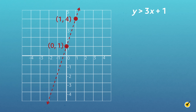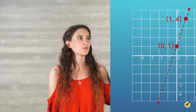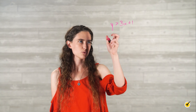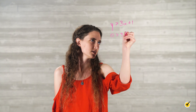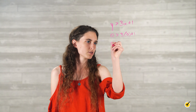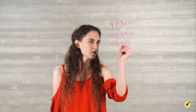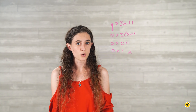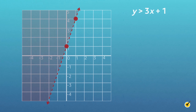To figure out which region to shade, select a test point to substitute into the inequality and solve. An easy test point is the origin (0, 0). Substituting 0 for both x and y in the inequality y is greater than 3x plus 1, we get 0 is greater than 3 times 0 plus 1, which simplifies to 0 is greater than 1. This is not true, so the origin cannot be part of the solution set. That means the values to the right of the graphed line are not solutions, so we shade the area to the left of the line.